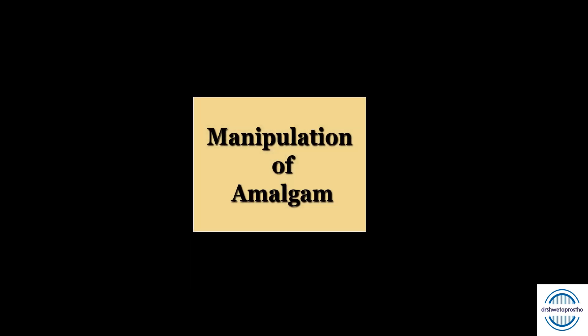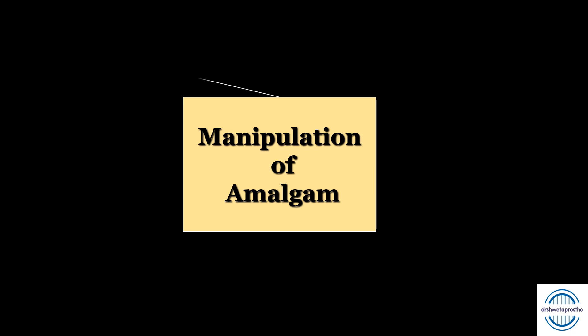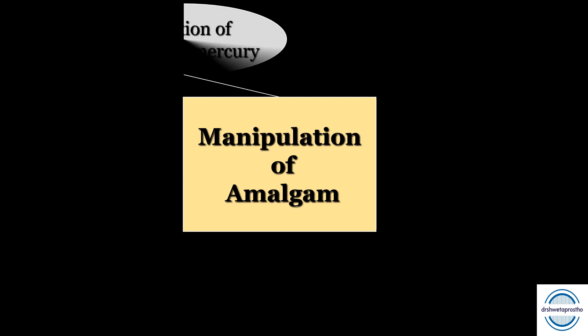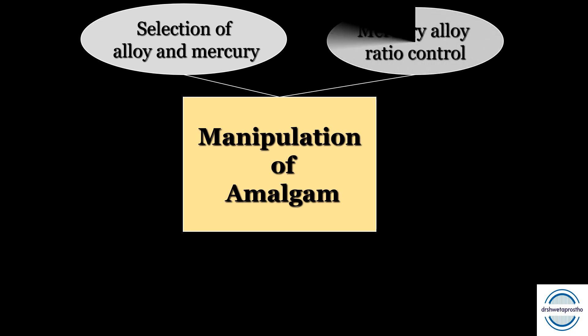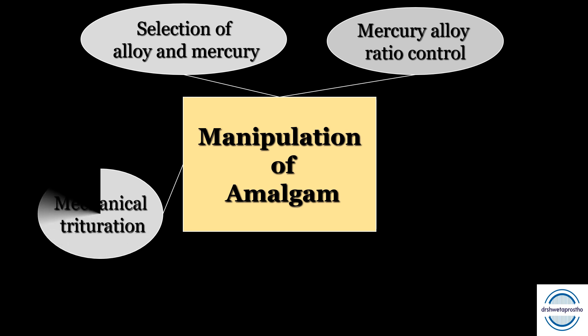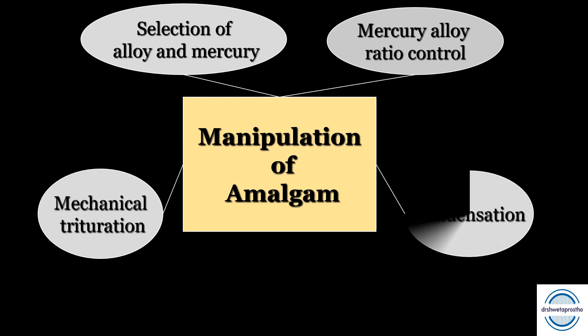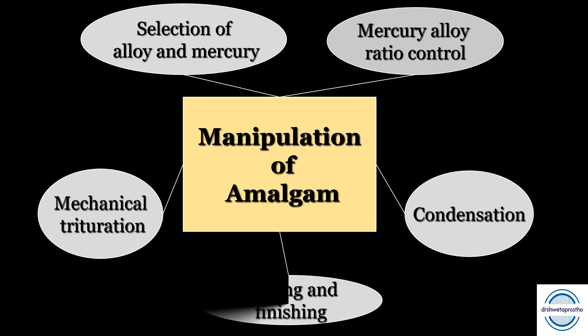First we come to the manipulation of dental amalgam. The clinical success of the amalgam restoration depends on its manipulation. The steps involved are: selection of the alloy, the mercury-alloy ratio, control measures, mechanical trituration (mixing), condensation of amalgam, and finally carving and finishing of the dental amalgam restoration.